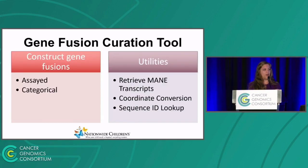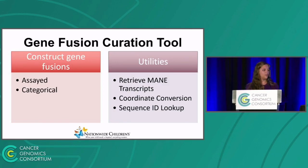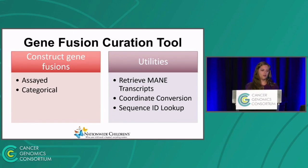Now that we've covered the necessary background information for building gene fusions as according to the specification, we'll switch gears into this cool tool that we built called the gene fusion curation tool, or gene fusion builder. This is a web application that allows you to learn more about the specification by constructing genes using a drag-and-drop interface. We support building both assayed and categorical fusions, and additionally regulatory fusions. The application also offers various helpful utilities such as retrieving main transcripts, coordinate conversion, and sequence ID lookup.